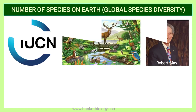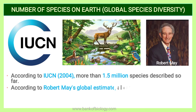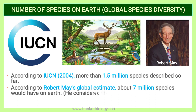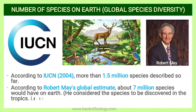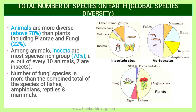Next are the number of species on earth, covering global species diversity. According to IUCN — the International Union for Conservation of Nature — in 2004, more than 1.5 million species have been described so far. According to Robert May's global estimate, about 7 million species would exist on earth. He considered species yet to be discovered in the tropics; only 22% of total species have been recorded so far, whereas the rest remain to be discovered. Animals are more diverse, above 70%, than plants including Plantae and fungi.